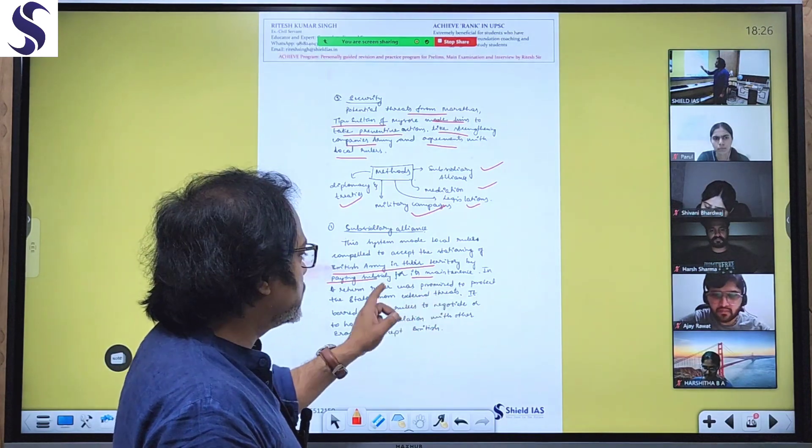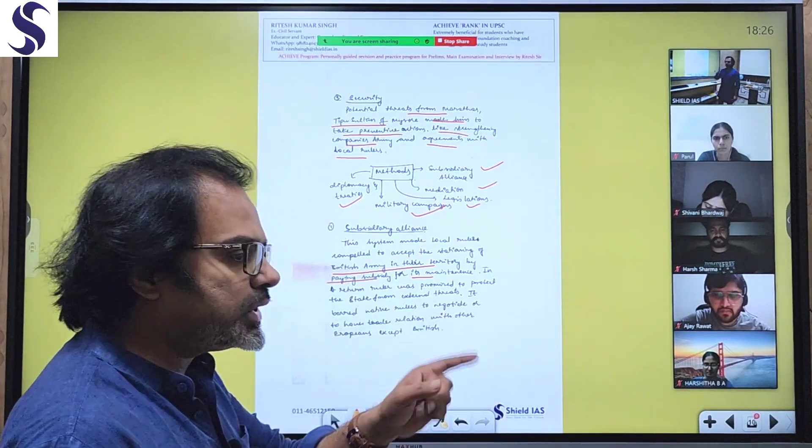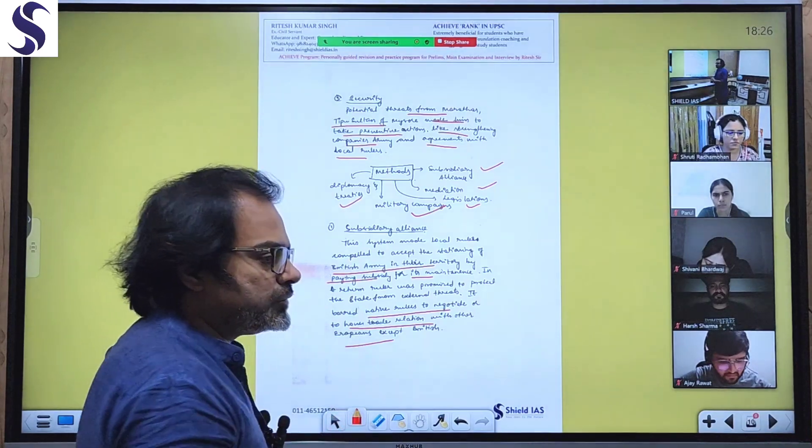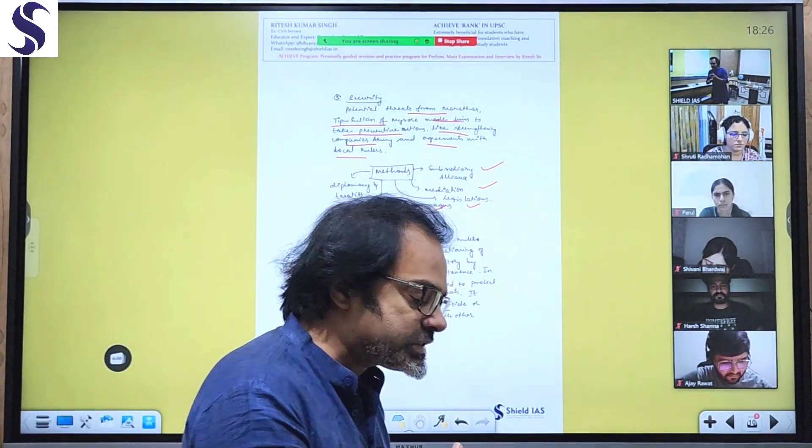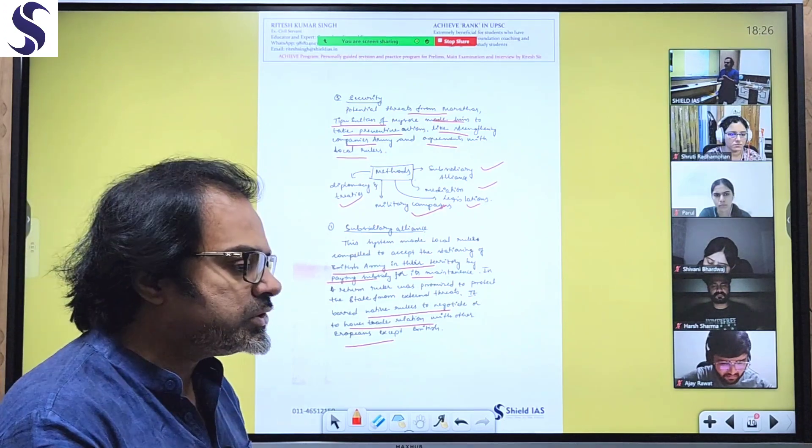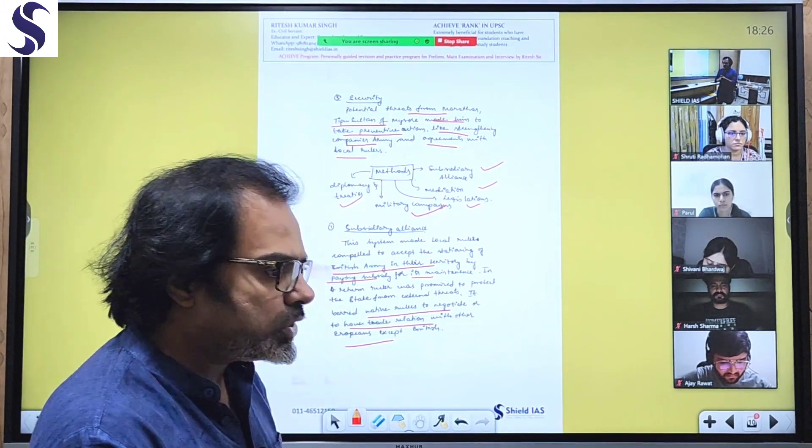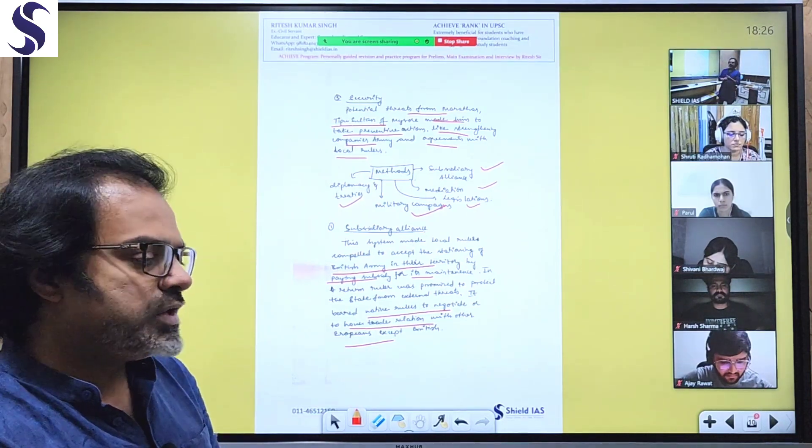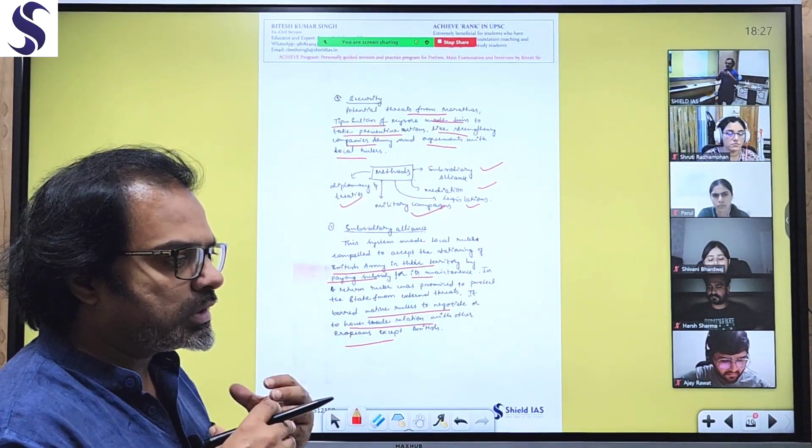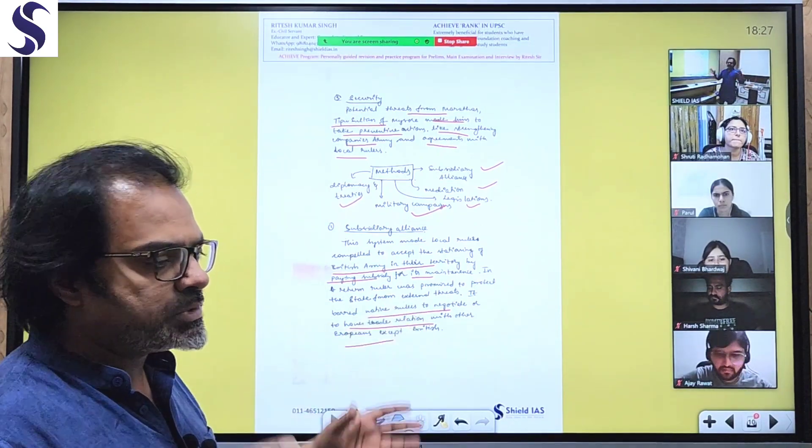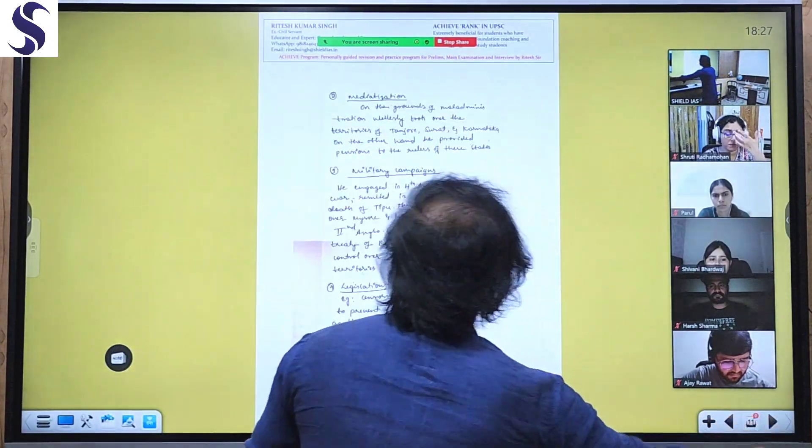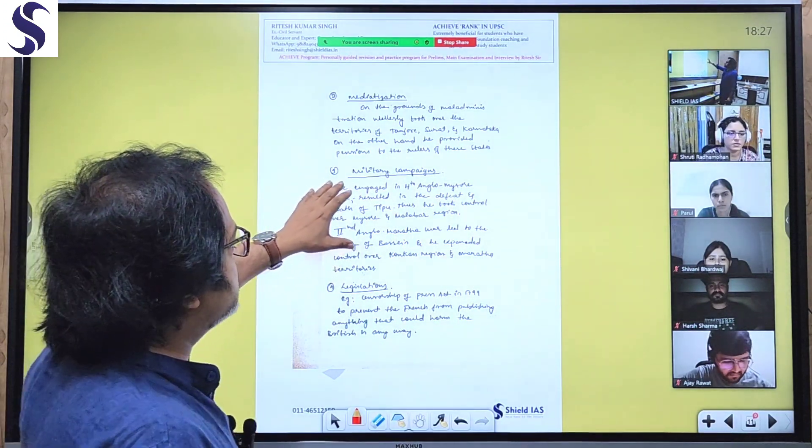He used various methods: subsidiary alliance, military campaigns, diplomacy and treaties, and legislation. The Subsidiary Alliance was the most well-known system. This made local rulers compelled to accept the stationing of British army in their territory by paying subsidy for its maintenance. In return, the British promised to protect the state from external threats. It barred native rulers from negotiating or having trade relations with other Europeans except the British. The conditions included the 20-year monopoly, geopolitical competition against the French, and security concerns requiring an expansionist policy.